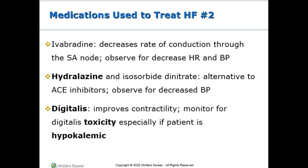Ivabradine decreases the rate of conduction through the SA node, slowing the heart rate — the SA node is the pacemaker of the heart. Hydralazine and isosorbide dinitrate are alternatives to ACE inhibitors used to treat blood pressure.